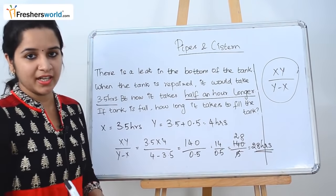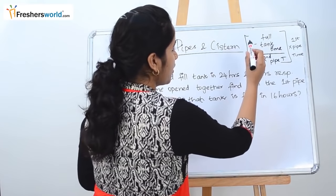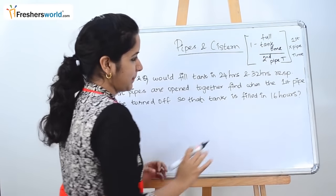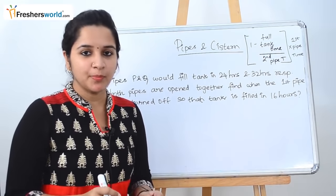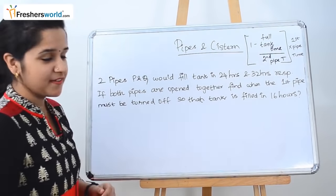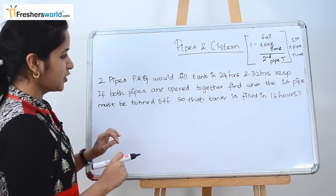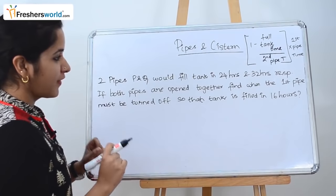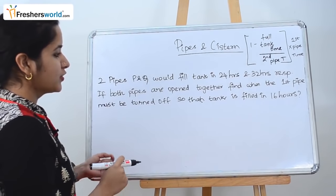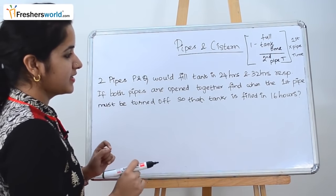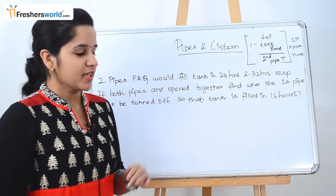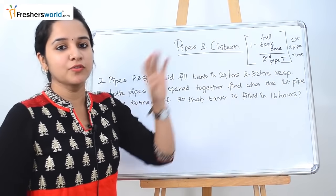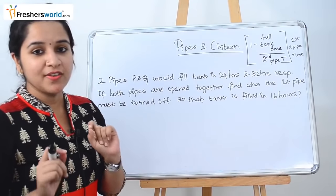The second concept uses the formula: (1 minus full_tank_time / second_pipe_time) × first_pipe_time. This gives the time at which the first pipe must be turned off. Problem: two pipes P and Q fill a tank in 24 hours and 32 hours respectively. Both pipes are opened together. Find when the first pipe must be turned off so that the tank is filled in exactly 16 hours.